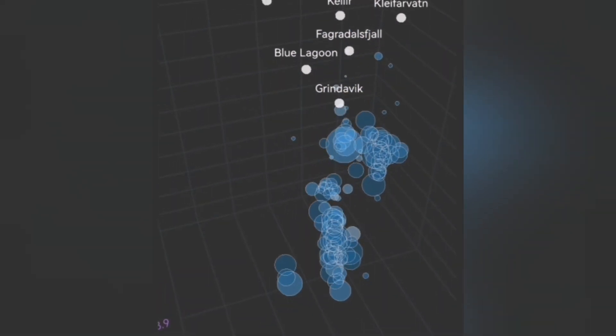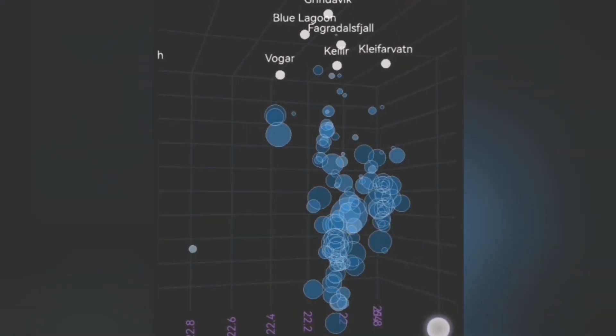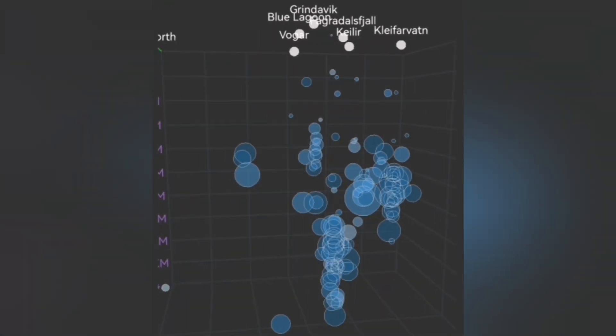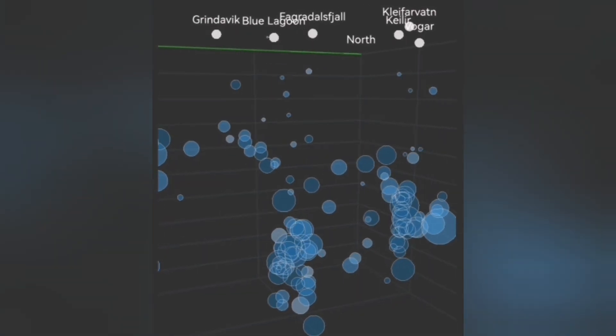For example, when I look at the earthquake depth chart, you can see a tongue of the earthquakes at an angle moving from what is practically under the Schwarzenegger toward the Grindavik.